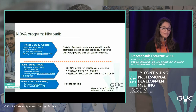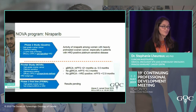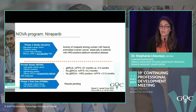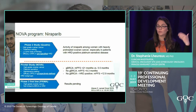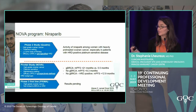Niraparib has also been investigated. A phase 2 trial showed niraparib activity using an HRD test beyond BRCA mutation. In the phase 3 maintenance trial for platinum-sensitive recurrence, patients were not selected by BRCA status — all patients responding to platinum-based chemotherapy were eligible. This trial showed BRCA mutation patients had the greatest benefit, with PFS improving from 5 to 21 months.